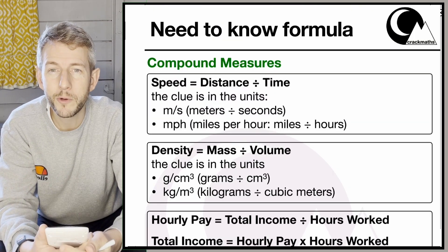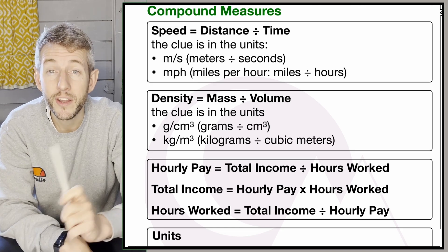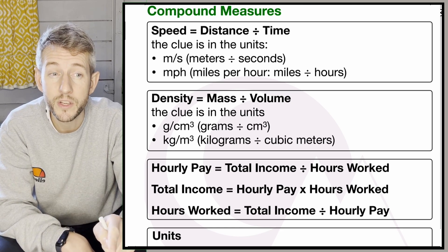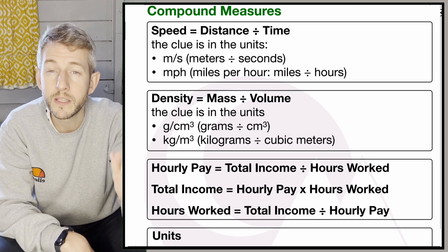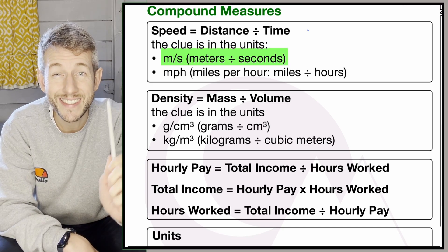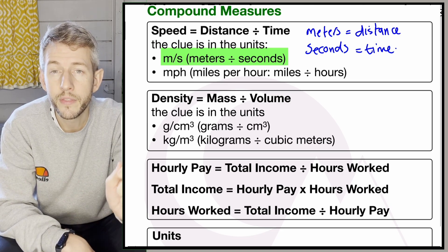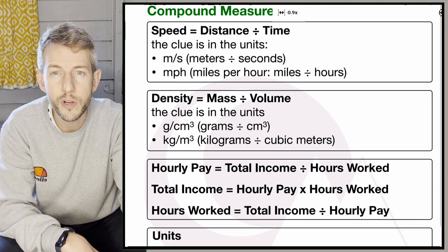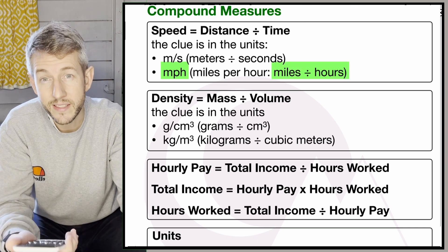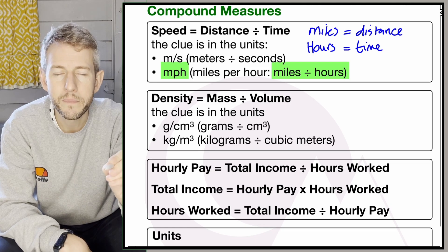This next page covers compound measures. Speed equals distance divided by time, and the clue is always in the units. If we see metres per second, that means metres divided by seconds — distance divided by time. The same applies to miles per hour: miles divided by hours. So speed equals distance divided by time.